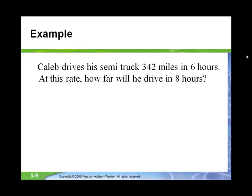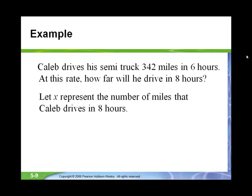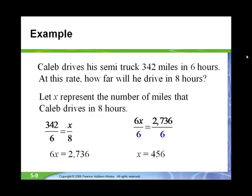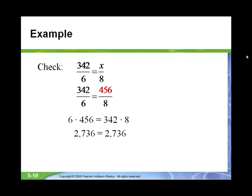We have 342 miles in 6 hours, and we want to know how many miles in 8 hours. So we have a ratio 342 miles to 6 hours equal to an unknown value to 8 hours. We do cross multiplication: 6 times x equals 8 times 342, so 6x equals 2,736. Divide both sides by 6 and get x equals 456. So it looks like Caleb can drive 456 miles in 8 hours. We check our work to make sure we get the correct answer, and we do. Caleb will be able to drive 456 miles in 8 hours.